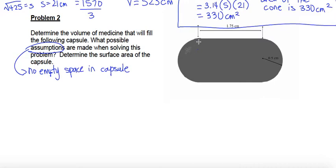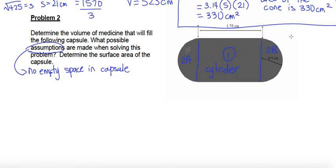If we look at the shapes that make up this pill capsule, we can draw lines to identify shape 1 as a cylinder. Then if we piece together the two rounded ends — 2a and 2b — they form an entire sphere. So 2a plus 2b equals one sphere. When figuring out the volume, we take the volume of the cylinder and add it to the volume of a sphere.